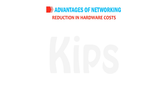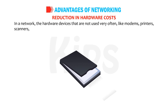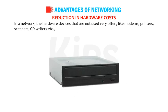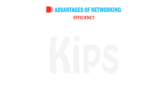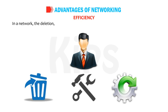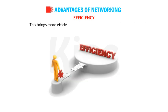Reduction in hardware cost — in the network, hardware devices that are not used very often, like modems, printers, scanners, CD writers, etc., can be shared, which reduces the cost of hardware. Efficiency — in the network, deletion, modification or upgradation of software or data is to be done at a single point only, which brings more efficiency and effectiveness into a working system.